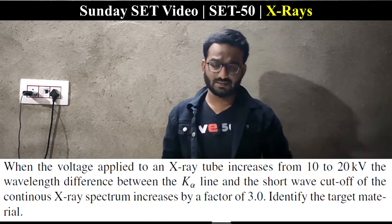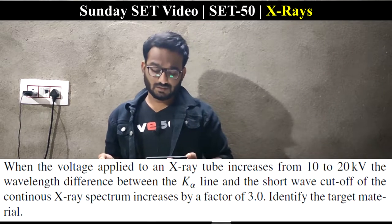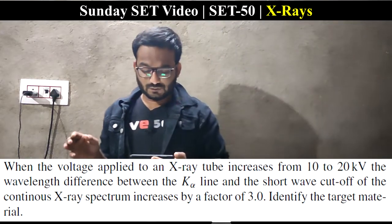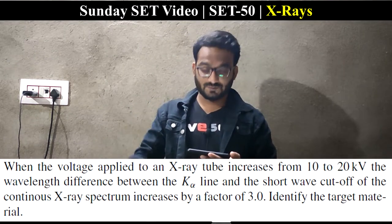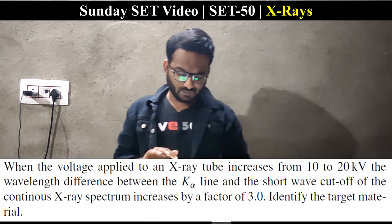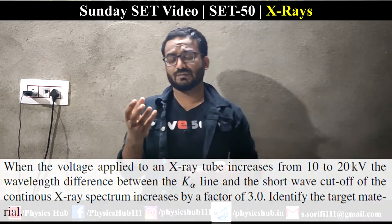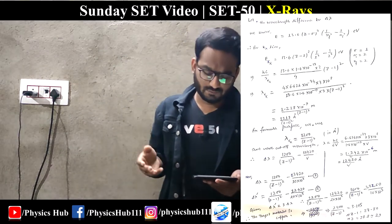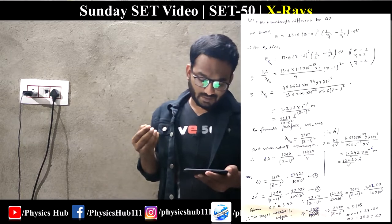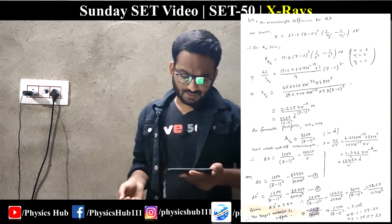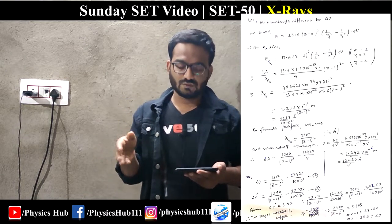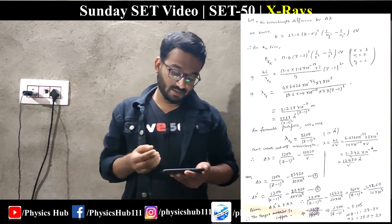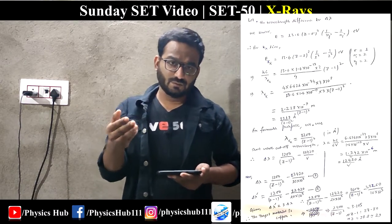Question 4: When the voltage applied to an X-ray tube increases from 10 kV to 20 kV, the wavelength difference between the Kα line and the short-wavelength cutoff of the continuous spectrum increases by a factor of three. Identify the target material. Let Δλ = λ_Kα − λ_min. For Kα: E_Kα = 13.6(Z − 1)² [1/1² − 1/2²] in eV, giving λ_Kα ≈ 1218/(Z − 1)² angstroms.